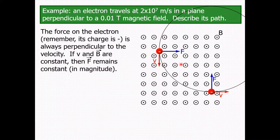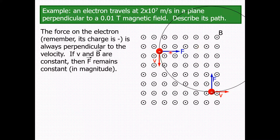The field is uniform and directed out of the paper. The electron's direction is in the plane perpendicular to the magnetic field. We must remember that the electron is a negative charge, so the force on the electron is always perpendicular to its velocity.